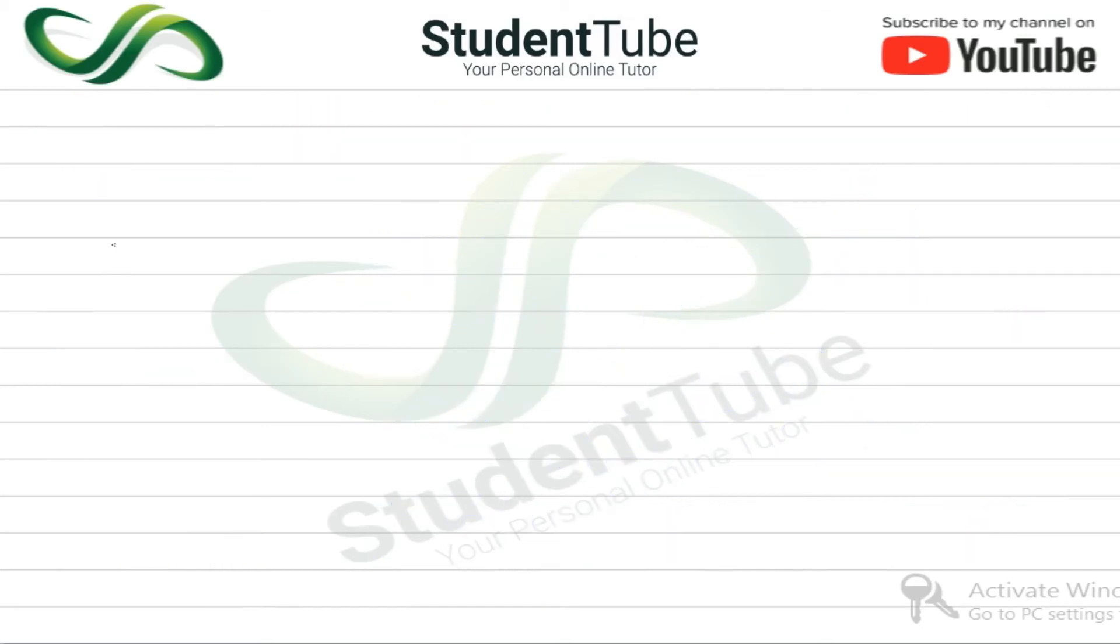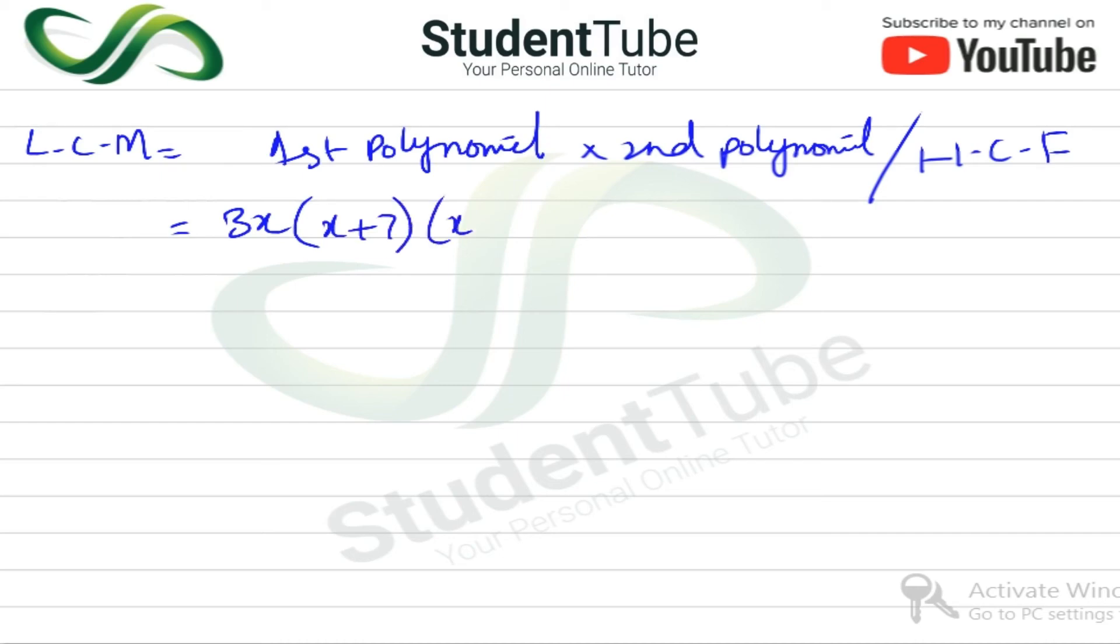After this, we will find the LCM. The formula for LCM we know: LCM = first polynomial × second polynomial ÷ HCF. So in place of the first two polynomials, we will not write what was in the question, we will write the answers that we got. So in the first polynomial we had 3x.